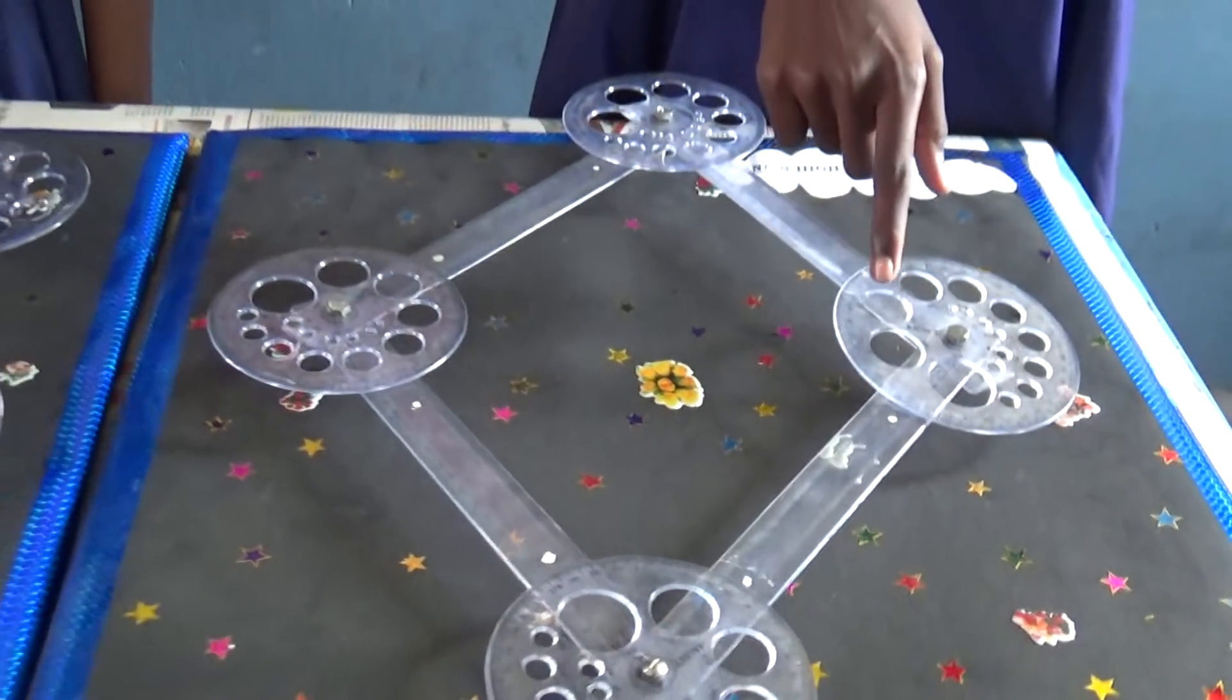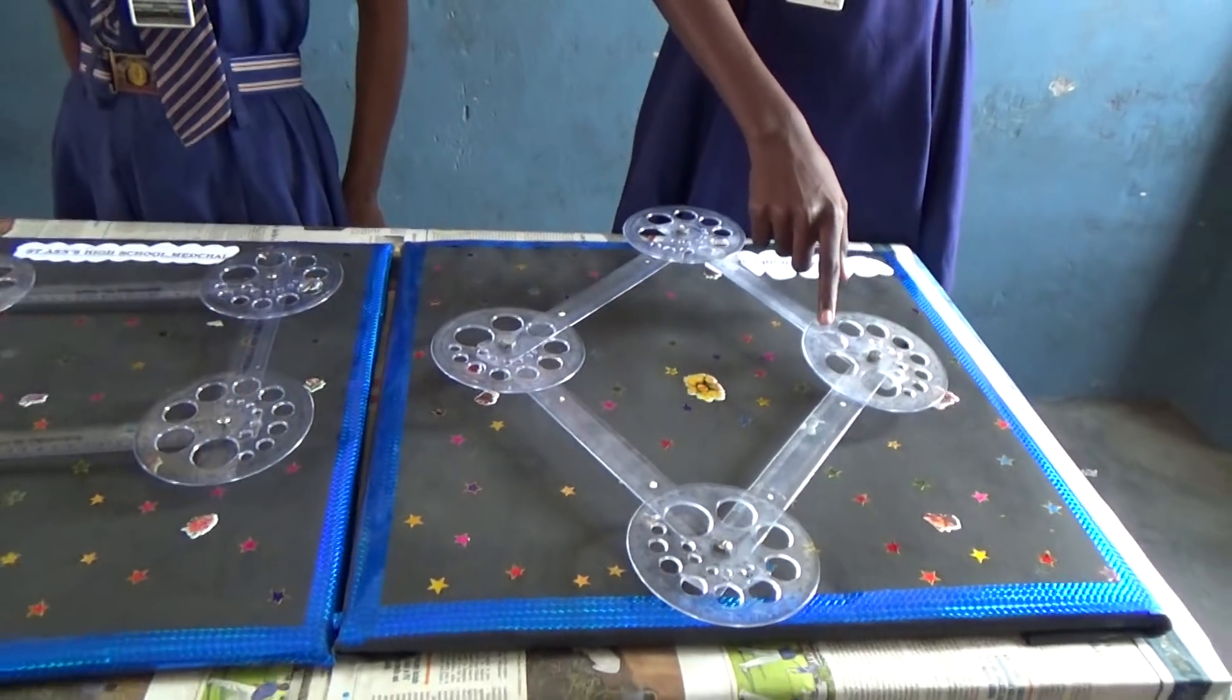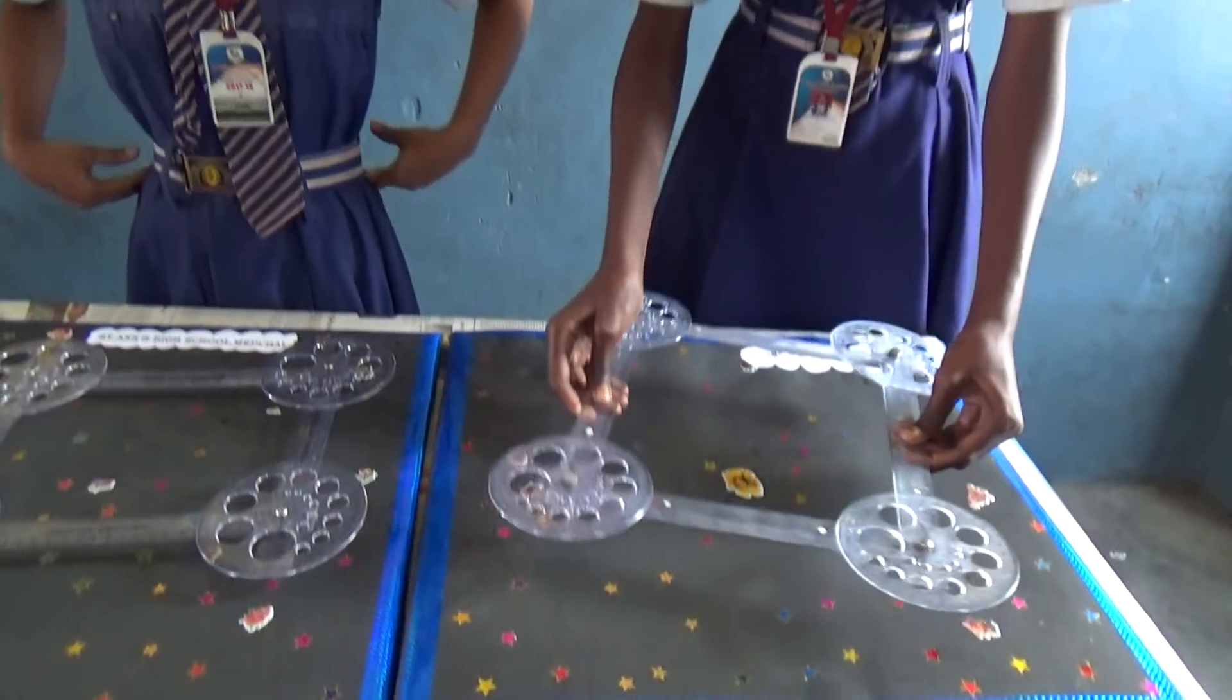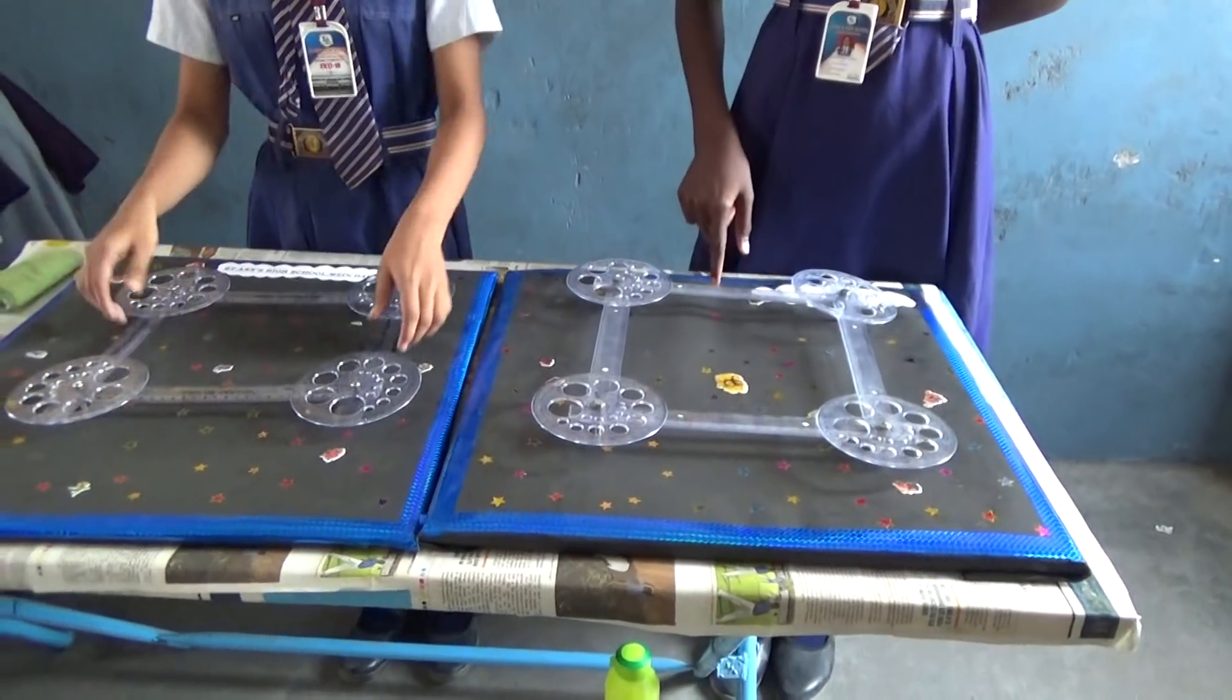If one of the angles is 90 degrees in rhombus, then all the other angles also become 90 degrees and it becomes a square. In square, a square is a special type of rhombus and all of the vertices are 90 degrees.